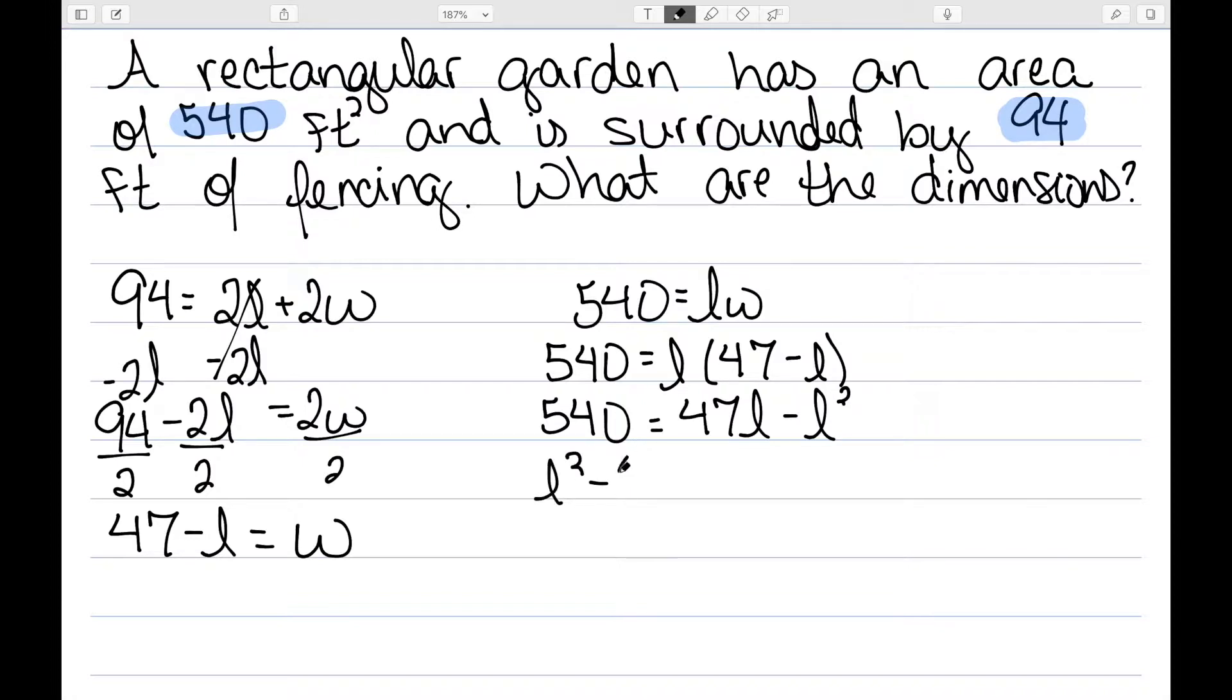When solving quadratics, we want to get everything on one side. So I'm going to move the l squared over, the 47l over, and then the 540. So I have l squared minus 47l plus 540 equals 0.